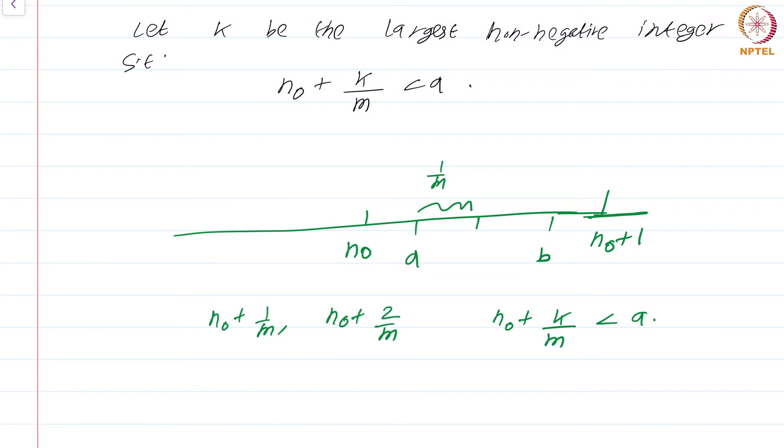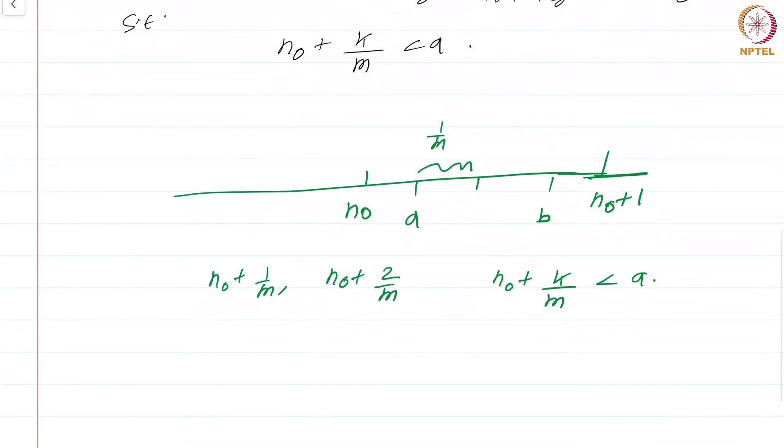Then what we are doing is starting from n_0, we are first going through n_0 + 1/m, then n_0 + 2/m, and so on, and we are finding the largest integer such that n_0 + k/m is less than a. There will always be such an integer simply because n_0 is less than a. Eventually when k exceeds m you get n_0+1, which certainly exceeds a.